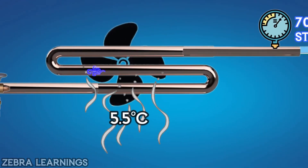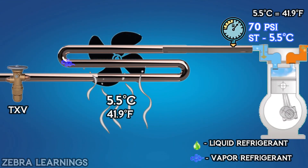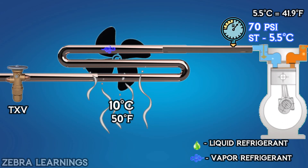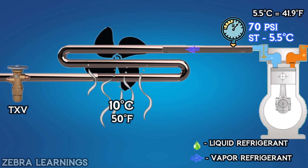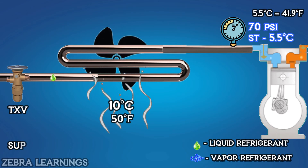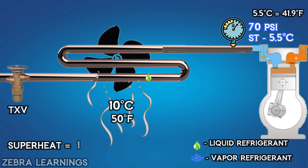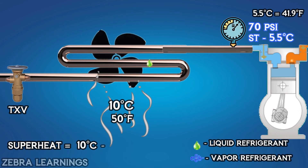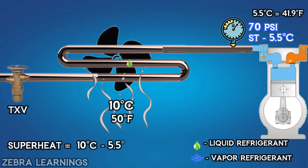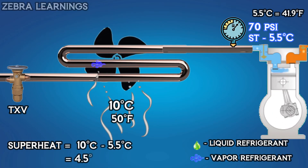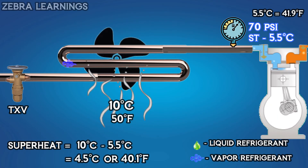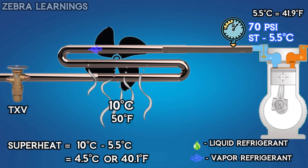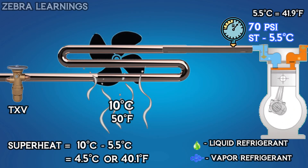Temperature above 5.5 degrees Celsius is superheat temperature. If we give 10 degrees Celsius heat in the indoor unit, the superheat value is: current temperature 10 degrees Celsius minus saturation temperature 5.5 degrees Celsius equals 4.5 degrees Celsius. So when it enters the compressor, the refrigerant is only in vapor state.